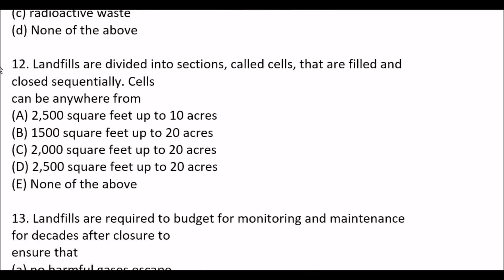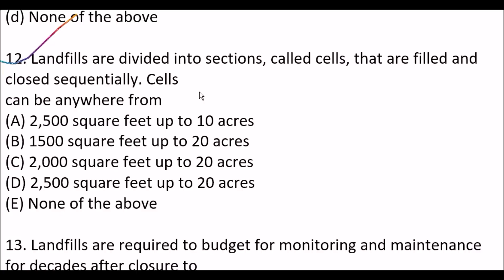Next question: landfills are divided into sections called cells that are filled and closed sequentially. A cell can be anywhere from — option A, 2,500 sq ft up to 10 acres; option B, 1,500 sq ft up to 20 acres; option C, 2,000 sq ft up to 20 acres; option D, 2,500 sq ft to 20 acres; option E, none of the above. Right answer is option C, 2,000 square feet up to 20 acres.